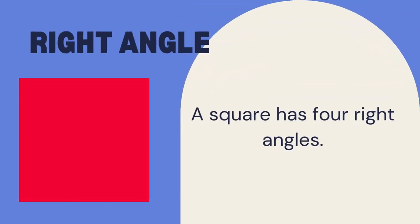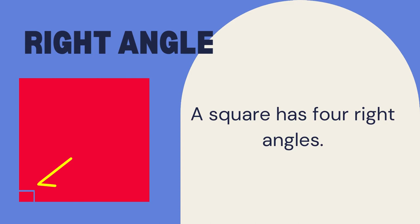Look at this square. This angle is a right angle. A square has four right angles.